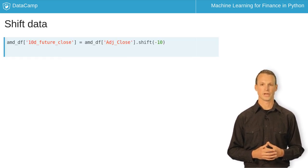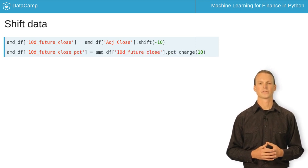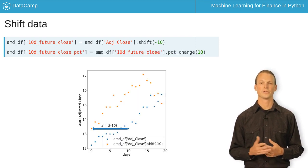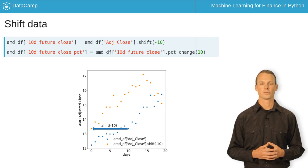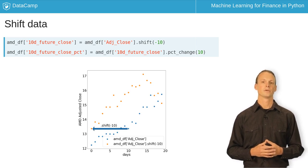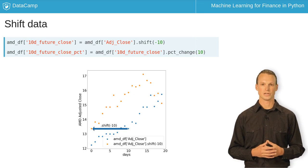Another tool we'll use is Shift from Pandas. This shifts the index, so if we give it minus 10, as shown here, then we'll create a new column with the closing price 10 days in the future. We can then get the price percent change 10 days in the future with Pandas PCTChange.